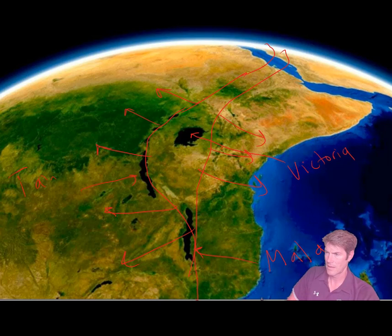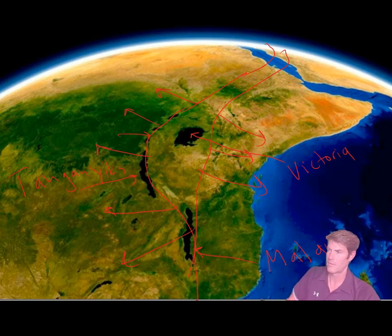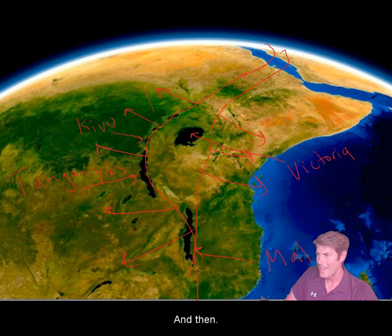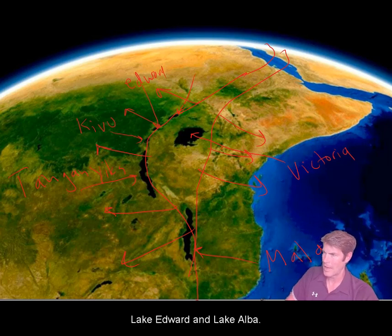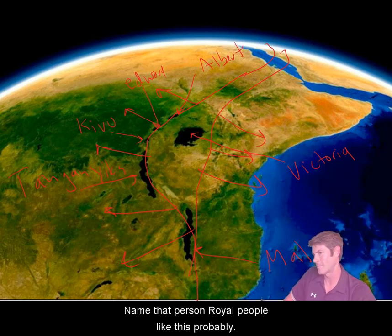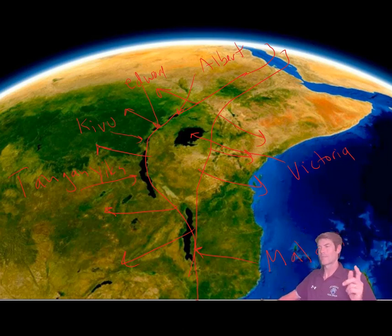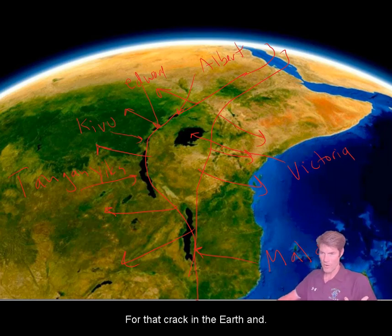This one is Tanganyika, and then you've got some little ones over here — Kivu. And then Lake Edward and Lake Albert, named after some royal people — probably Queen Victoria's brothers or something like that. From space, you can really get a feel for that crack in the earth.